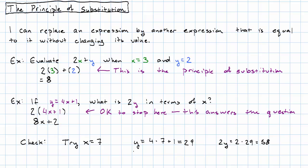On the other hand, plugging directly into our answer, 8x plus 2 is 8 times 7 plus 2. That's 56 plus 2 is 58. So that really worked, right?